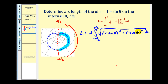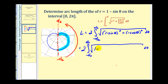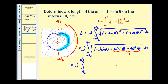Let's go ahead and start to simplify our radicand. If we square (1 − sin θ), we'll have 1 − 2 sin θ + sin²θ. This will be plus cos²θ. Notice we have sin²θ + cos²θ, which equals one. So we can combine the ones, and we'll have the square root of 2 − 2 sin θ.